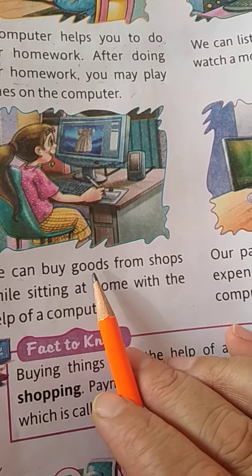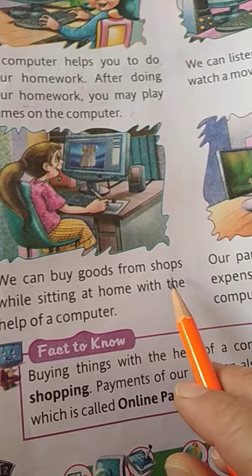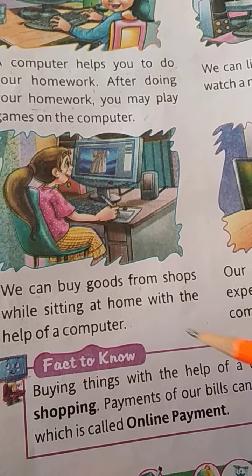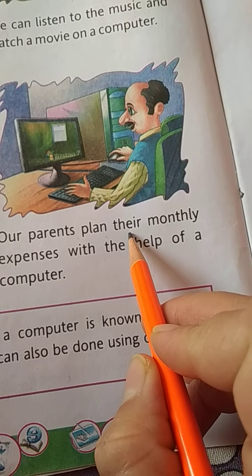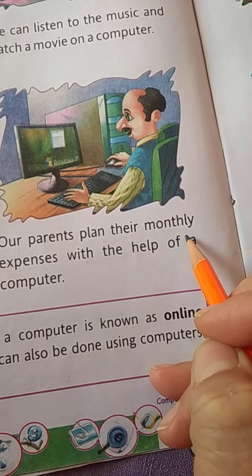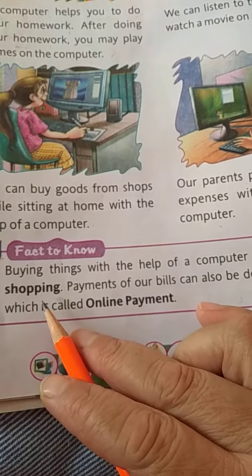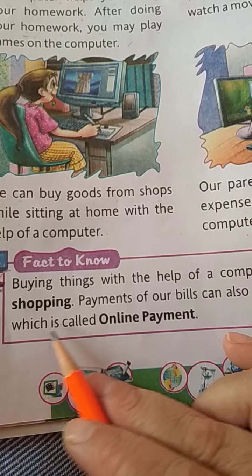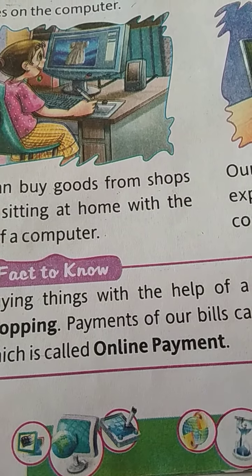We can buy goods from shops while sitting at home with the help of a computer. Our parents plan their monthly expenses with the help of a computer. Buying things with the help of a computer is known as online shopping. Payment of bills can also be done using a computer, which is called online payment.